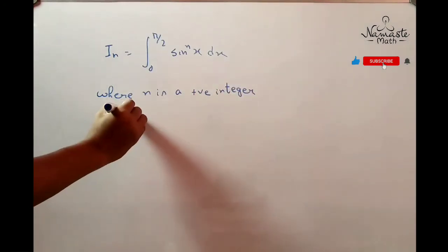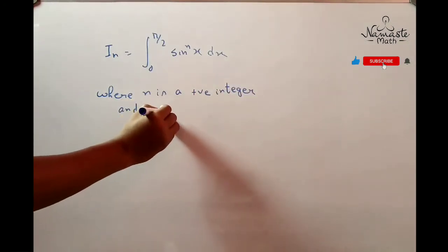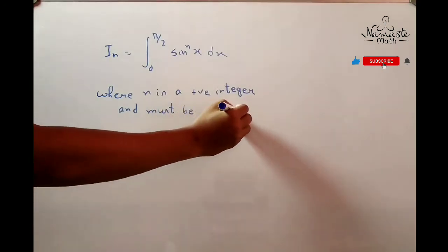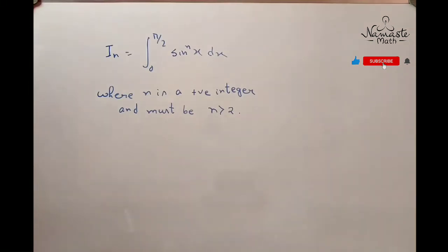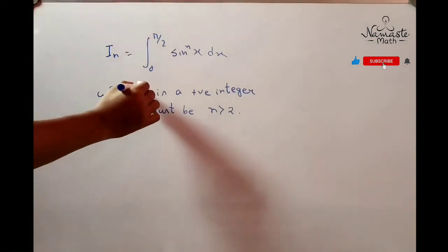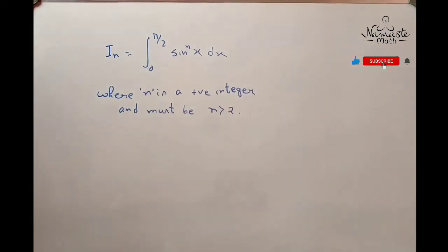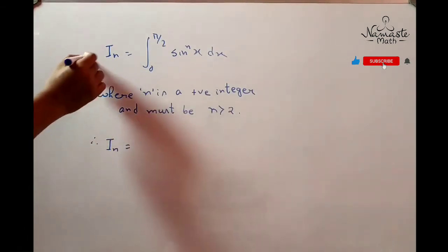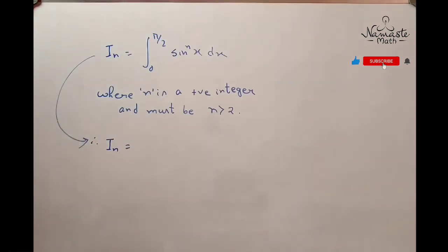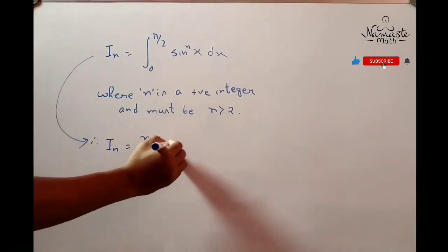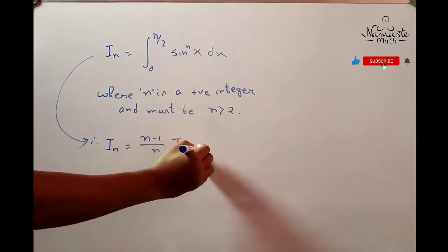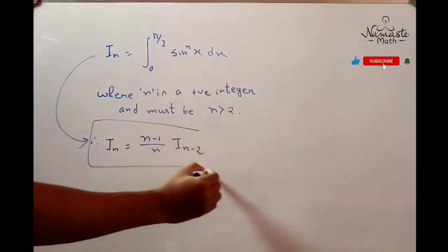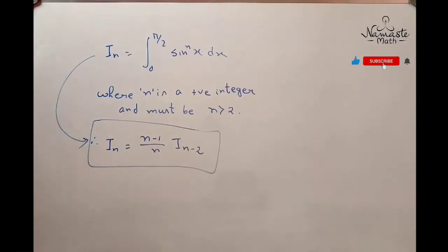Now consider the integral as In where In = integral from 0 to π/2 of sin^n x dx, and the condition is n must be a positive integer with n greater than 2. The formula is In = (n-1)/n times I(n-2), where n must satisfy the above condition and the limit must be 0 to π/2.